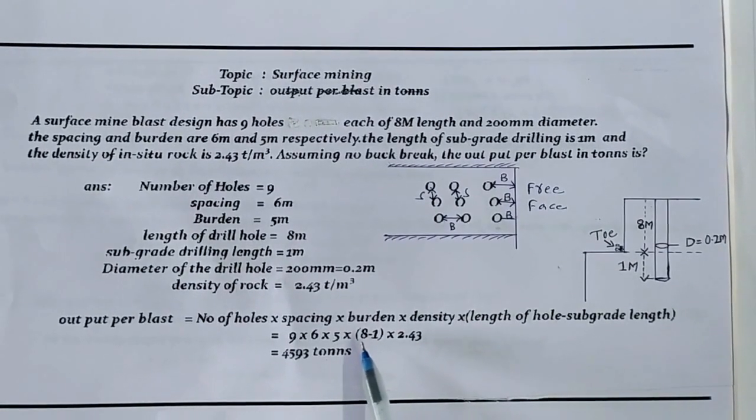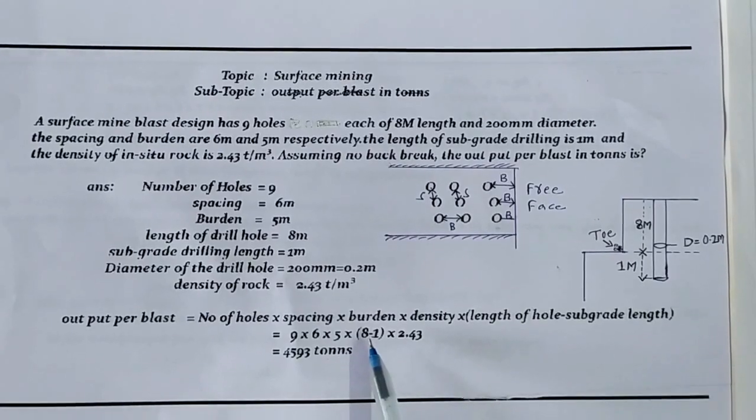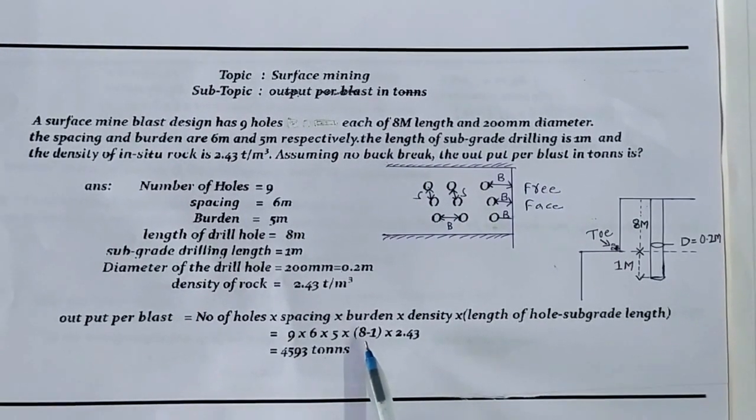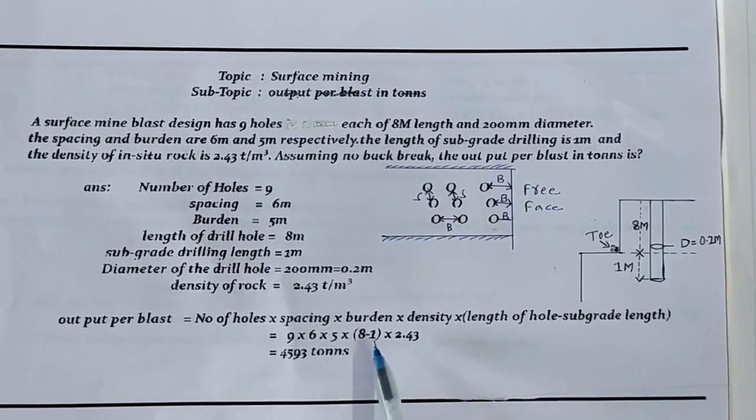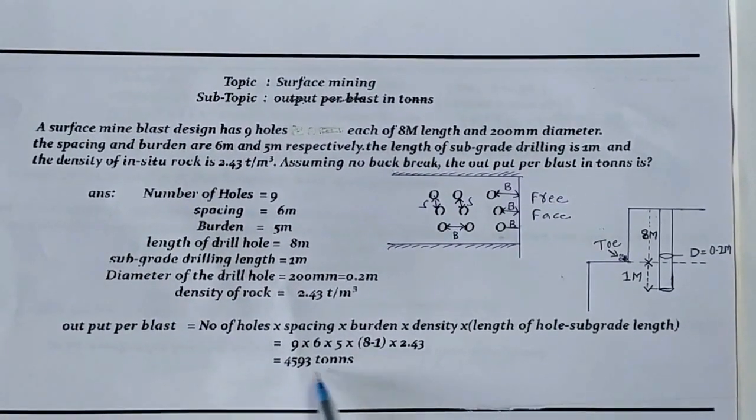Length of each hole is 8 meters minus the subgrade length of 1 meter. Finally, we get the output per blast is 4593 tons.